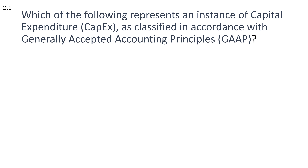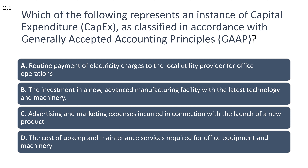Question number one: which of the following represents an instance of capital expenditure (CapEx) as classified in accordance with generally accepted accounting principles (GAAP)? Options: A) routine payment of electricity charges; B) investment in a new advanced manufacturing facility; C) advertising and marketing expenses for a new product launch; or D) cost of upkeep and maintenance for office equipment. After each question we will have an explanation for the right answer.